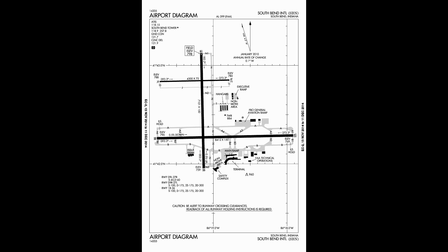Here I have a chart of the South Bend, Indiana airport. Let's say we're sitting at the main ramp at the terminal building at the bottom of the chart, and ground control gives us a clearance to taxi to runway 36. They would say: 'November 123 Alpha Bravo, taxi to runway 36 via Bravo, November.' You repeat it back: 'Taxi to runway 36 via Bravo, November, November 123 Alpha Bravo.' You start with the instruction and end with your tail number to verify the correct plane read back the correct clearance.